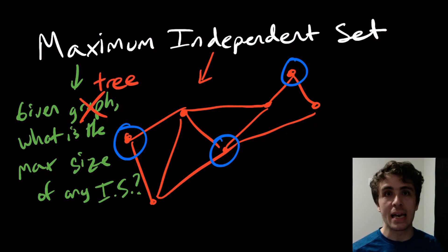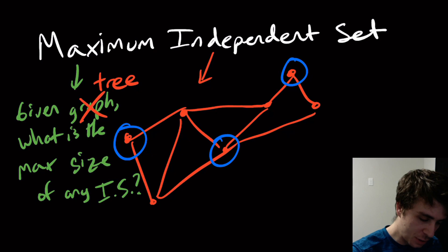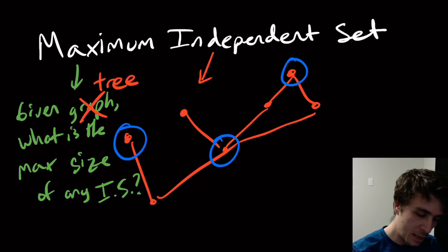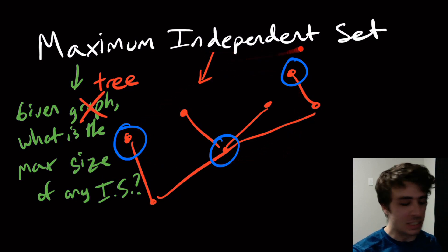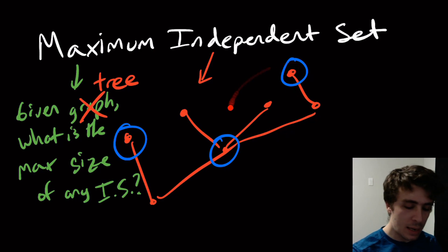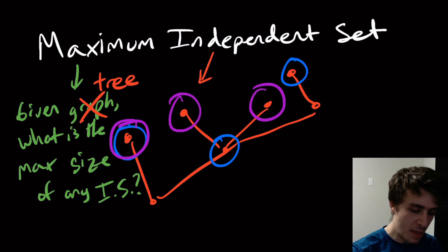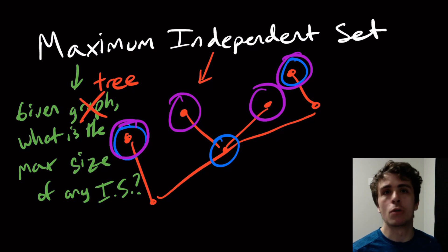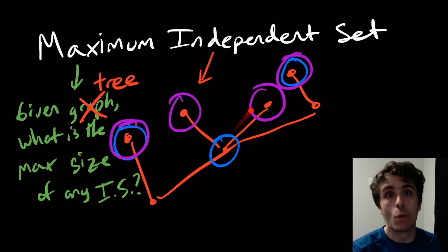A tree is an acyclic graph — there are no cycles. So I could eliminate that edge, that edge, that edge, and that edge to get a tree. If I take that vertex, that one, that one, and that one, there are no edges between them and we get four vertices as the max independent set. So we can't just use a general technique; the answers can and will be different.